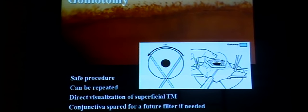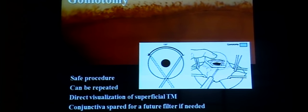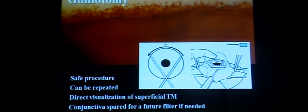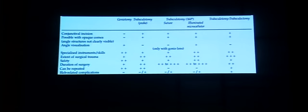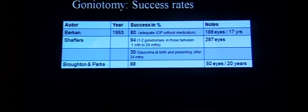Goniotomy was first introduced by de Vincentes but is attributed to Barkan, who combined it with gonioscopic lenses. The procedure enters the anterior chamber through a corneal incision, going across to slice through the high-risk tissue over 100 to 110 degrees. The success rate was found to be very effective in about 80% of cases. However, results of goniotomy are not good when glaucoma surgery is done within a month of birth or after two years.